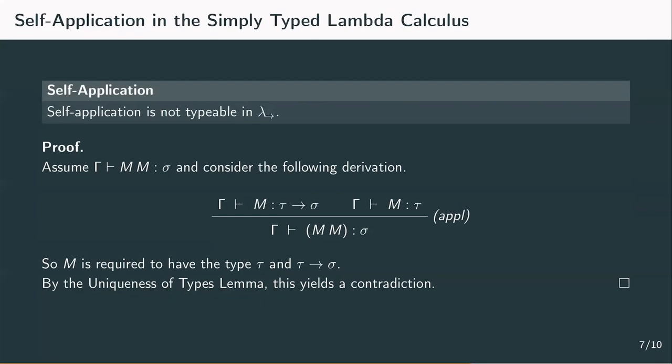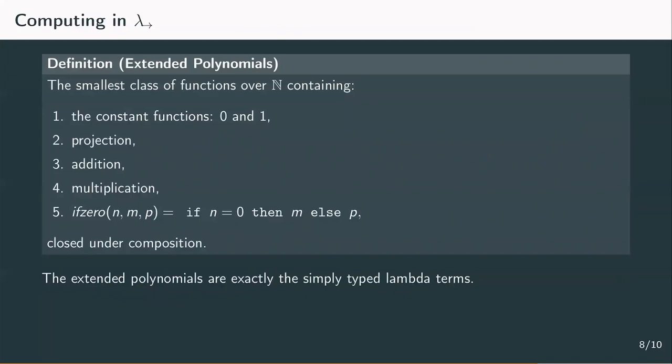The simply-typed lambda calculus defines exactly the class of extended polynomials over natural numbers. These are all polynomial functions, so the functions one can construct from the constants 0 and 1 composed with projections, addition and multiplication, extended by the conditional operator if0 that we already saw in the untyped lambda calculus.